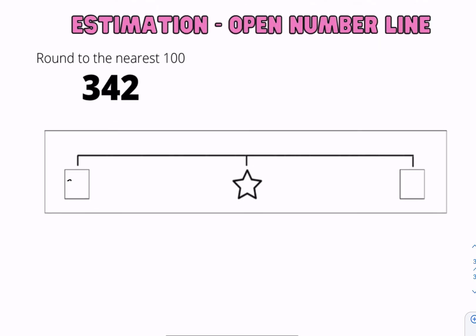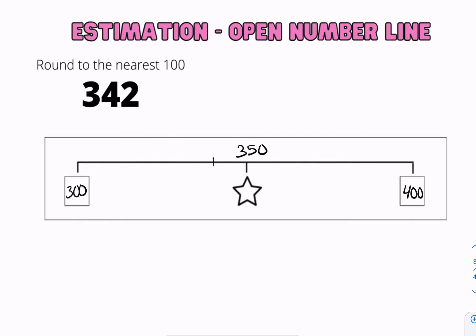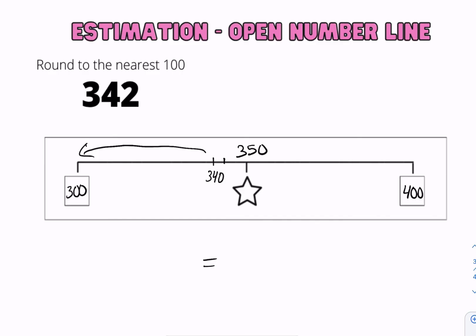We're going to round 342 to the nearest 100. We know it's between 300 and 400, and the midpoint is 350. Next, we try to find where 342 would lie — it's before 350, so it's before the star. Anything before the star always rounds down, so 342 rounds to 300.